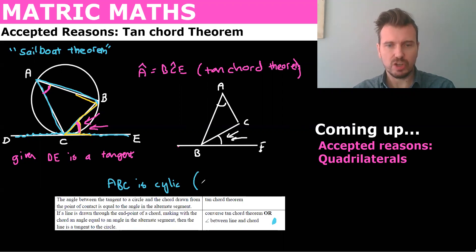And the reason is converse. So whenever we want to prove that something is cyclic, it's usually we just say converse and then whatever the theorem is that you learn the other way around. So here we just say converse tan chord theorem.